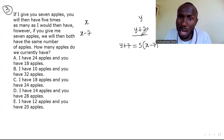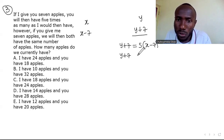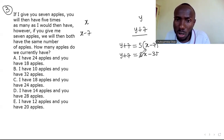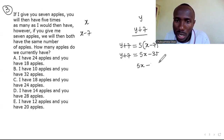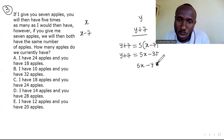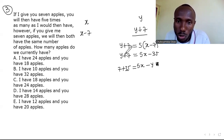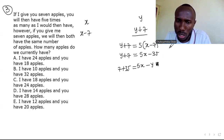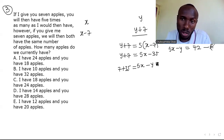Distributing the 5 gives y + 7 = 5x − 35. Rearranging — taking y to the other side and 35 to the other — gives 5x − y = 7 + 35 = 42. So equation one is: 5x − y = 42. This is leading us to a simultaneous equation.